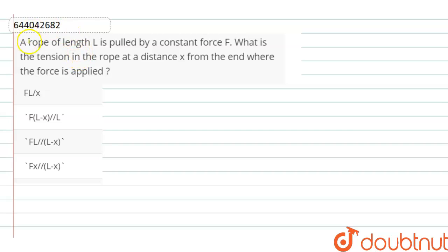Hello dear students, the question is: a rope of length L is pulled by a constant force F. What is the tension in the rope at a distance x from the end where the force is applied?